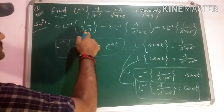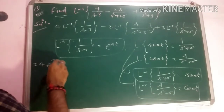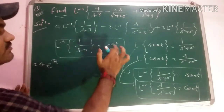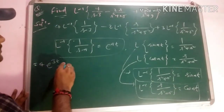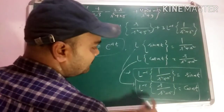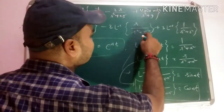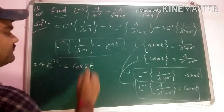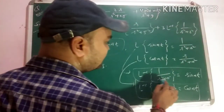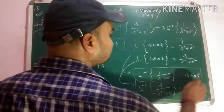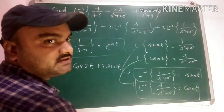For the first term: 4·L inverse [1/(s-3)] = 4·e^(3t), since a=3. For the second term: -2·L inverse [s/(s²+5²)] = -2·cos(5t), since a=5. For the third term: 3·L inverse [1/(s²+3²)] = 3·(1/3)·sin(3t) = sin(3t), since a=3.